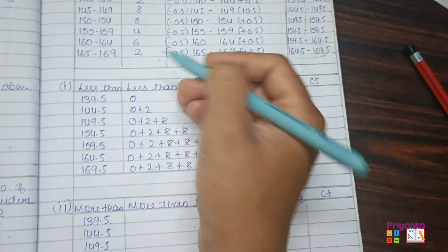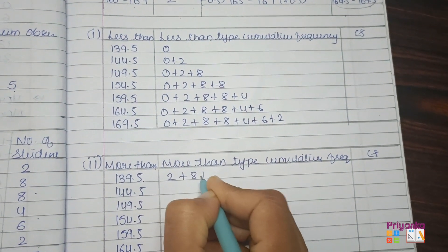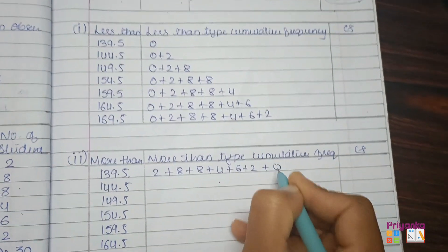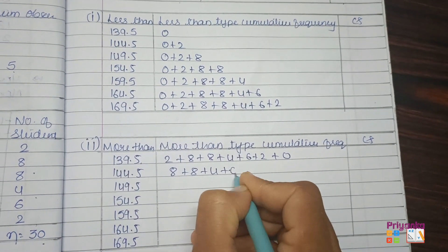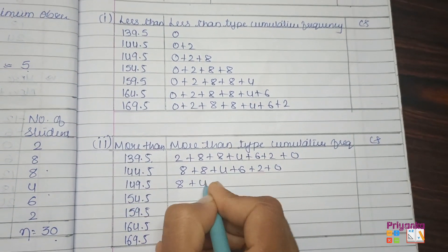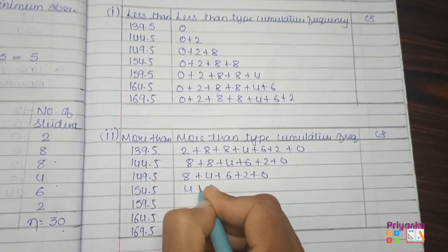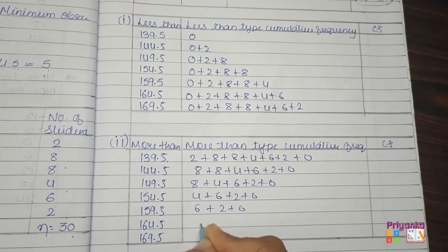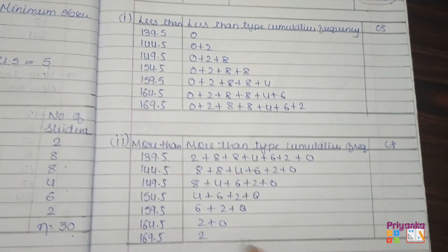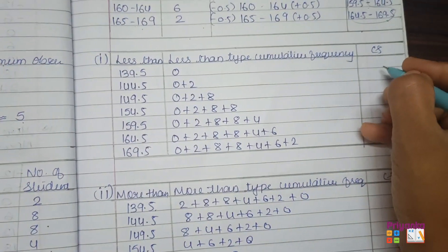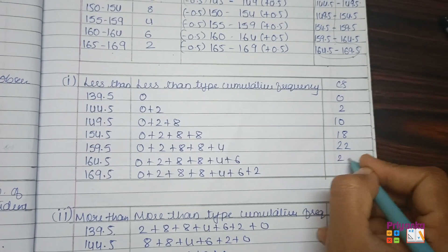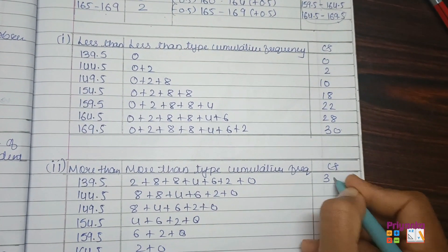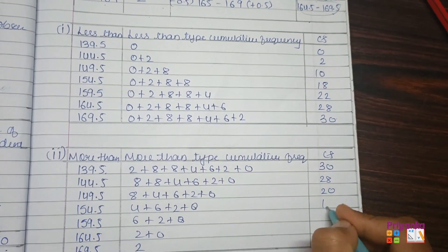For the more-than cumulative frequency, first take all frequencies: 2 plus 8 plus 8 plus 4 plus 6 plus 2, then add 0 at the end. One by one, remove the front frequency each time. The final less-than totals are: 0, 2, 10, 18, 22, 28, 30. The more-than totals are: 30, 28, 20, 12, 8, 2, 0. This completes question number four.